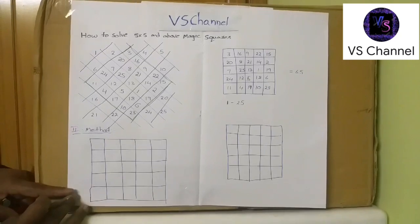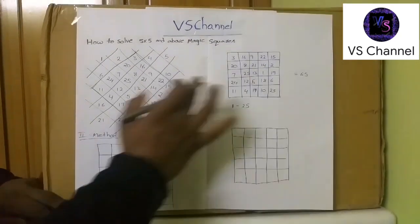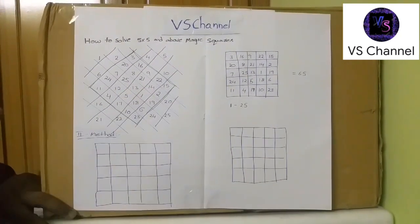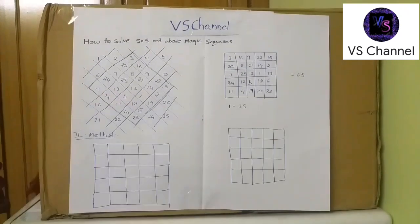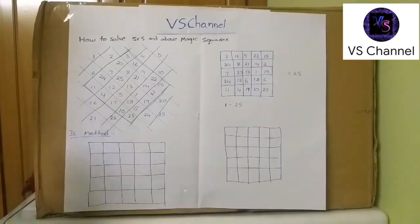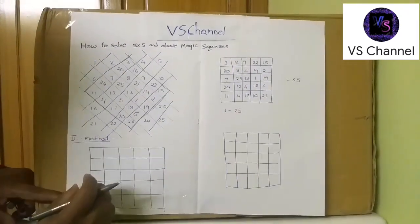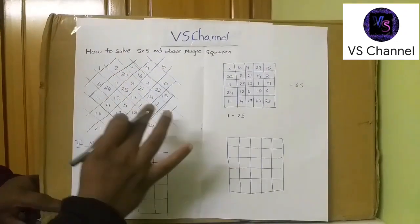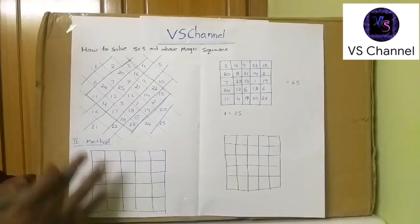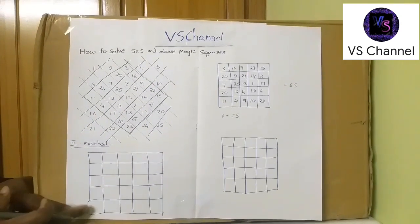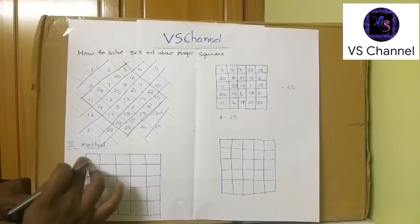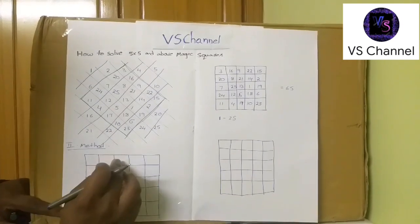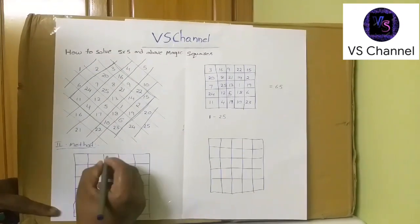So now we can see another logic. So this is the previous logic I explained in the first video. Now here I can explain another logic. So 5 into 5, we can take same 1 to 25 numbers. Here the first step is we need to start the filling of the number in the top row. In the top row, center column we need to start with 1.